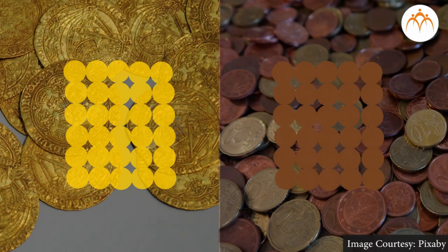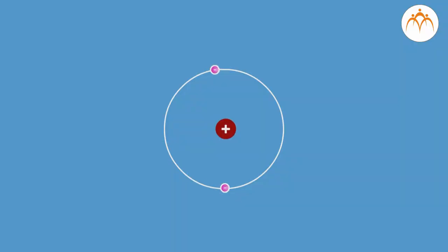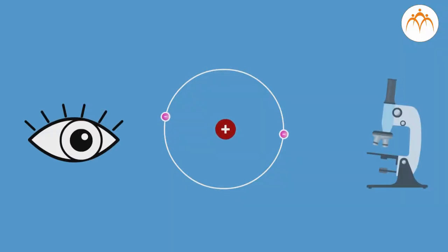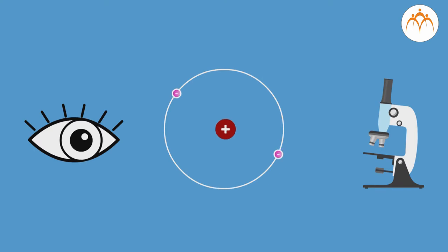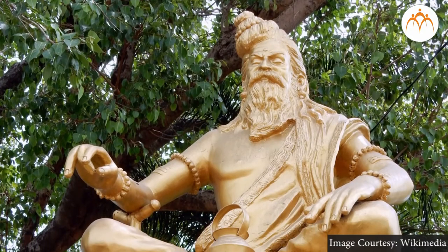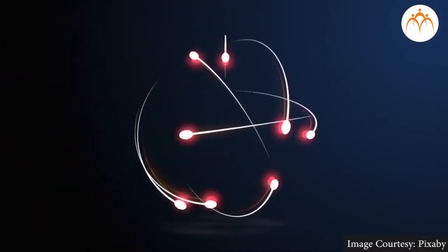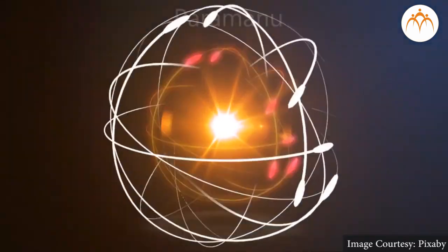All atoms of an element are alike, whereas different elements have different atoms. These atoms are very tiny and cannot be seen by the naked eye or compound microscope. Do you know who first put forth that the atom was the smallest indivisible unit of matter? Indian philosopher Kanad Muni in the sixth century BC coined the term 'parmanu' for the smallest indivisible, indestructible part of matter.